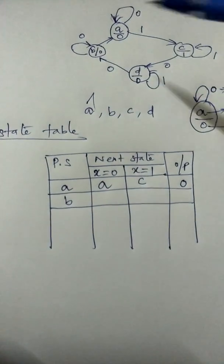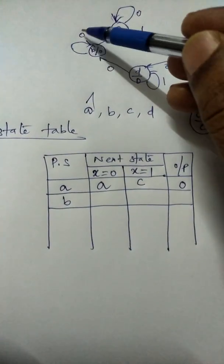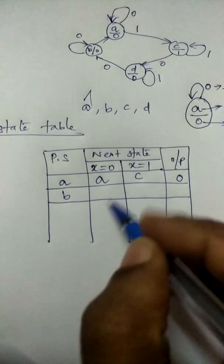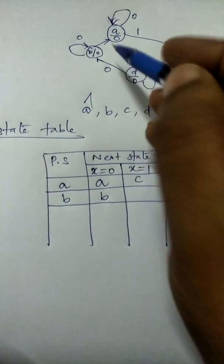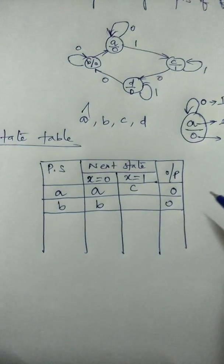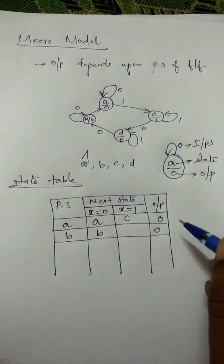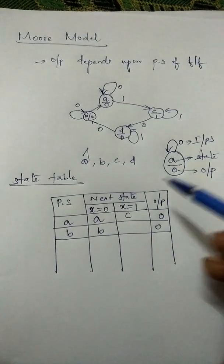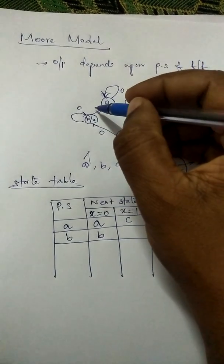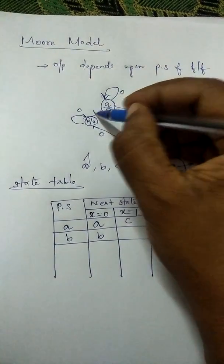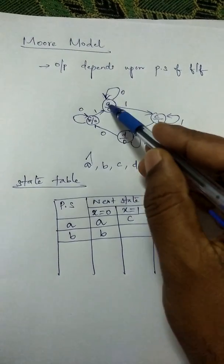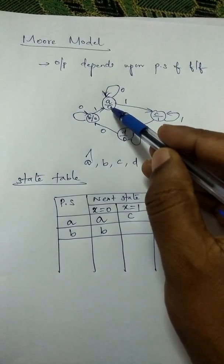For state B, when the input is 0 it goes to the same state B, with output 0. When the input is 1, it goes to state A, and the output is 0.